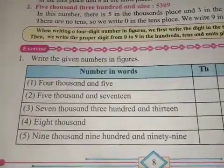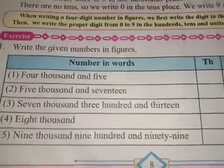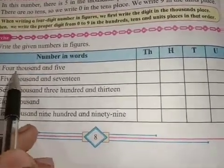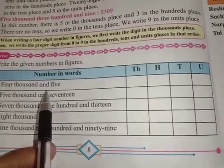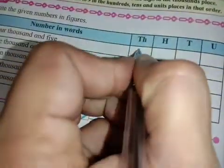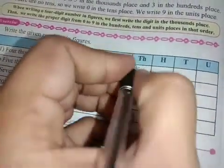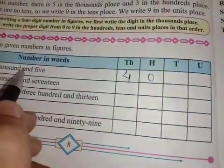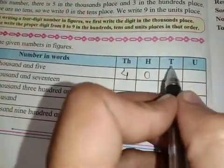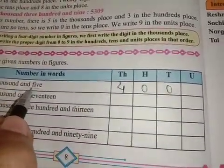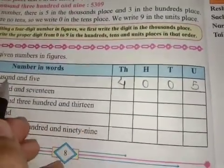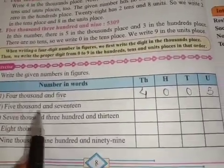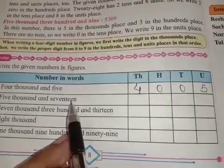Let's do the exercise — write the given numbers in figures. First: four thousand and five. We write four in the thousands place. How many hundreds? No hundreds, so we write zero. How many tens? No tens, so we write zero again. How many units? Five units — so we write five. Therefore it is 4005.